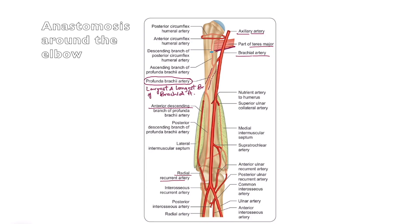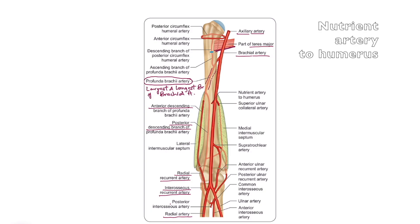The anterior descending branch of the profunda brachial artery anastomoses with the radial recurrent artery, which is a branch from the radial artery. The posterior descending branch continues into the back of the arm and anastomoses below with the interosseous recurrent artery, which is a branch of the posterior interosseous artery, behind the lateral epicondyle.